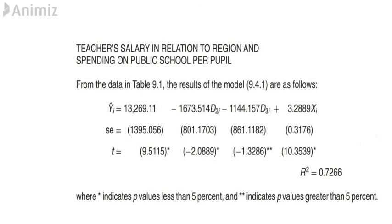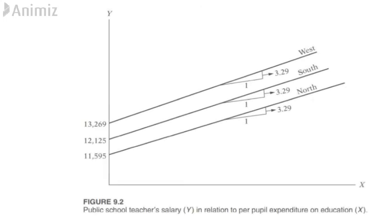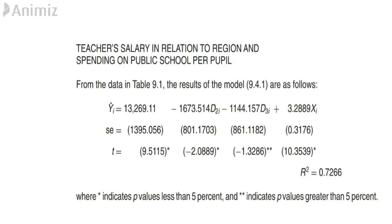Now let us look at the regression results. As these results suggest, ceteris paribus, as public expenditure goes up by a dollar on average, a public school teacher's salary goes up by about $3.29. Controlling for spending on education, we now see that the differential intercept coefficient is significant for the North region but not for the South. Taking into account the government expenditure on the schools, teachers' salaries are not significantly different for the South as before.